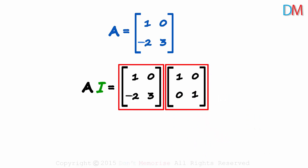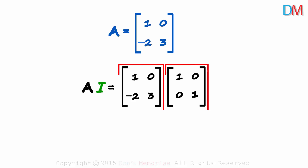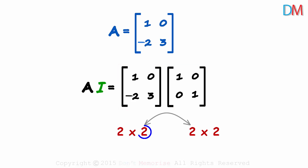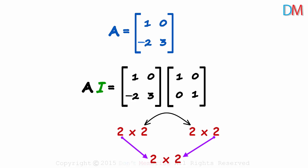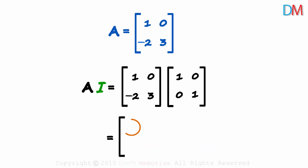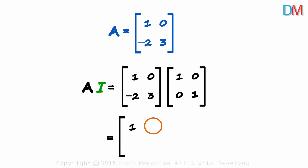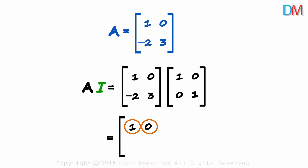We need to check if this product of two matrices gives us matrix A back. The order of both matrices is 2 by 2 — as the inner numbers are equal, this product is compatible, and the order of the resulting product will be 2 by 2. The (1,1) element is the first row times the first column: 1×1 + 0×0 = 1. The (1,2) element is the first row times the second column: 1×0 + 0×1 = 0. The first two elements are the same as A.